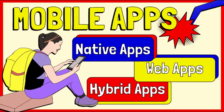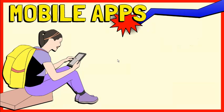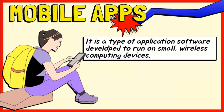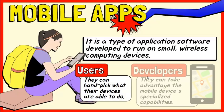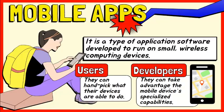In this video, we will talk about the three broad categories of mobile applications. A mobile application, most commonly referred to as a mobile app, is a type of application software designed and developed to run on small, wireless computing devices such as smartphones or tablet computers. Mobile apps allow consumers to handpick what their devices are able to do. Mobile app developers take into consideration the demands and constraints of the devices and also take advantage of their specialized capabilities.